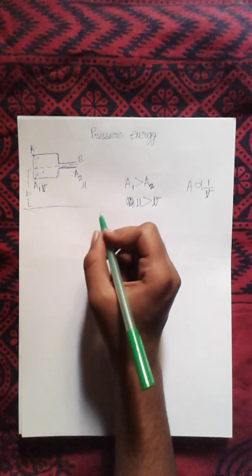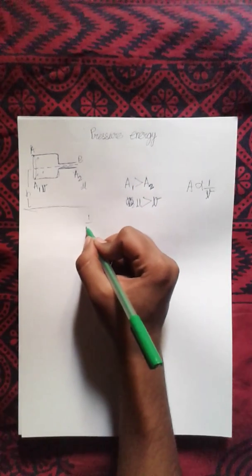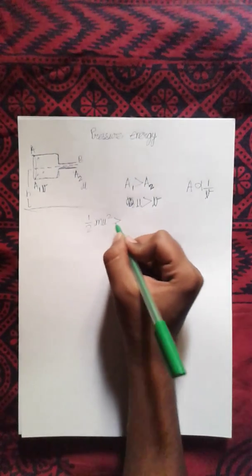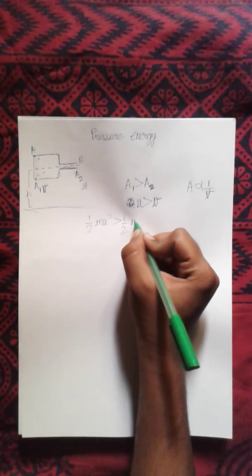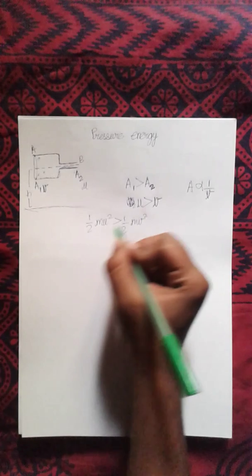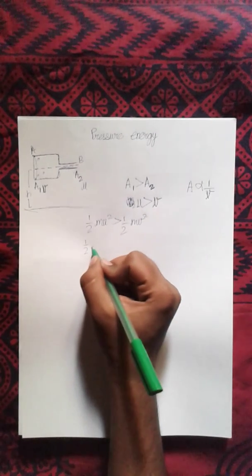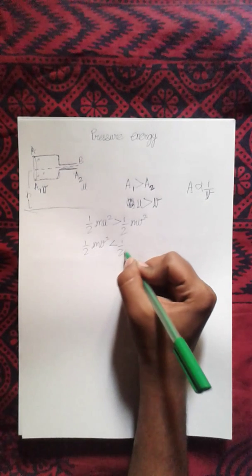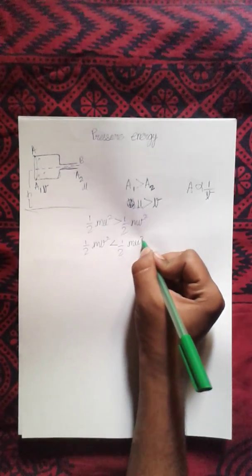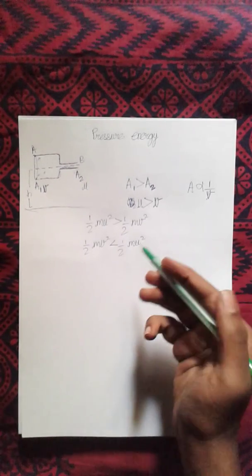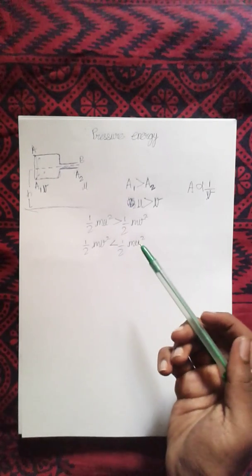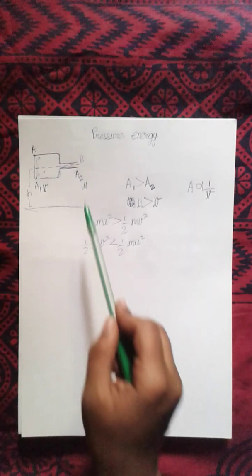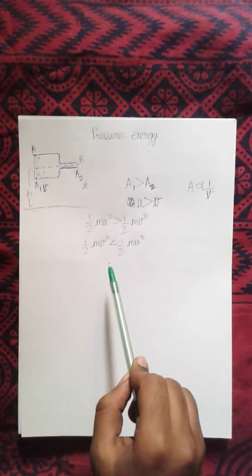Now let us take the kinetic energies. Half m u squared is greater than half m v squared, or half m v squared is less than half m u squared. So now we can tell that as a particle travels from here to here, there is a loss in kinetic energy.